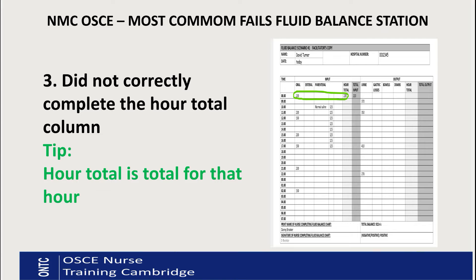The third common fail is not correctly completing the hourly total column. Every box in that column is simply asking: what is the total for that hour? Whether it's on the intake or output side, it's just the total for that particular hour. Some hours will have only IV fluid, some will have the total of IV fluid and oral fluid combined — the idea is simply the total for that hour.